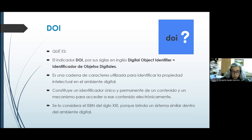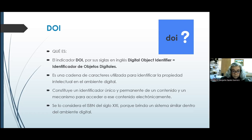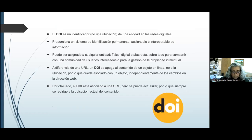Constituye un identificador único y permanente de un contenido y un mecanismo para acceder a ese contenido de manera electrónica. Se le considera el ISBN del siglo XXI porque brinda un sistema similar pero dentro del ambiente digital. Es muy parecido a lo que es el ISBN que se utiliza para los libros impresos y también digitales. Un nombre DOI es un identificador, no una ubicación de una entidad en las redes digitales. Proporciona un sistema de identificación permanente, accionable e interoperable de información.